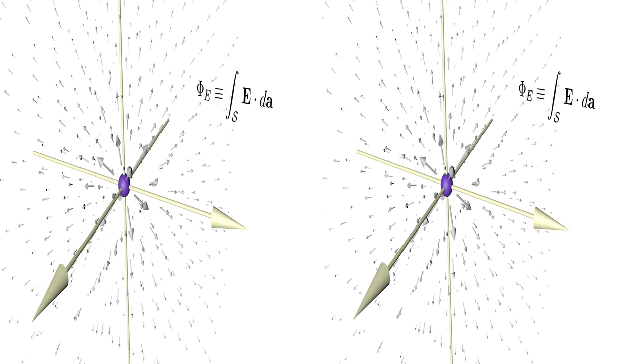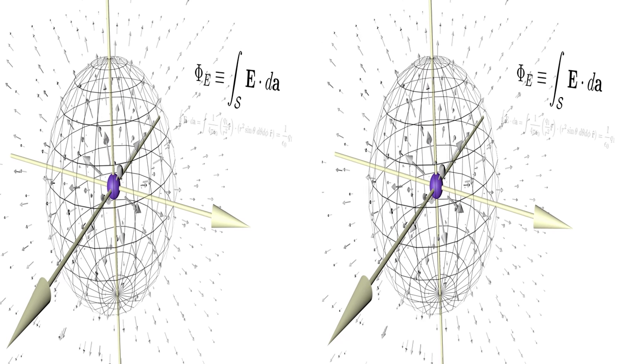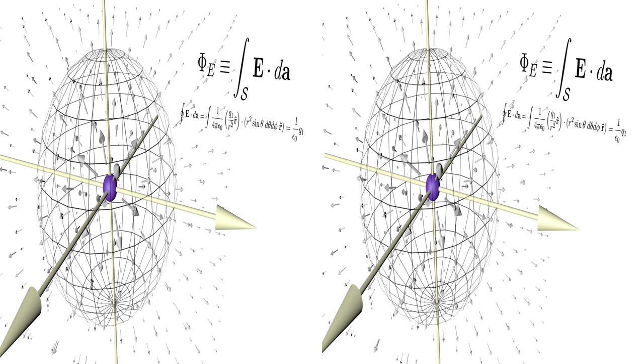If we place a point charge at the origin and use the surface of a sphere, we can easily calculate the flux and we get q divided by epsilon zero.